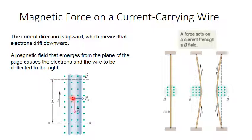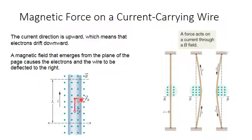Assuming we have negative charges moving downward and a magnetic field coming out of the screen, we apply the right-hand rule: put the four fingers in the direction of the drift velocity and rotate toward the magnetic field to find the direction of the magnetic force. But because the charges are negative, the force direction is opposite to the right-hand result. In this case, the force will be toward the right. This force acts on the charges inside the wire, and since the charges cannot move outside the wire, the force effectively acts on the wire itself.